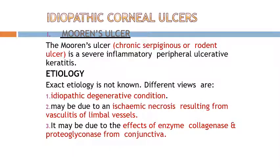Treatment of connective tissue disorder-associated peripheral corneal ulcers involves topical medication with cycloplegics, antibiotics, and lubrication. Topical steroids are used cautiously — not in the advanced stage, as they can further lead to corneal thinning. Systemic medications include immunosuppressants, corticosteroids, methotrexate, cyclophosphamide, cyclosporine, and oral vitamin C to promote healing.